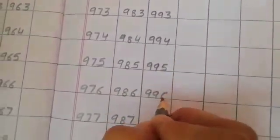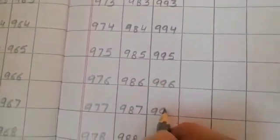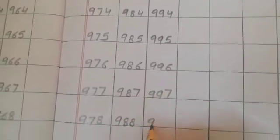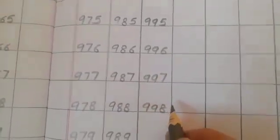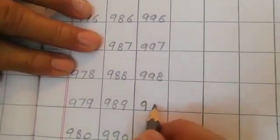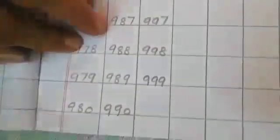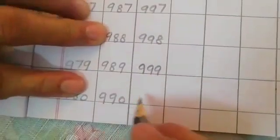996, 997, 998, 999. Now what comes after 999?